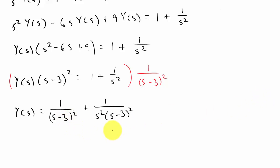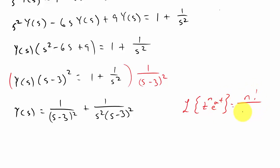We're going to have to take the inverse Laplace transform of both of these terms. The first one I can do directly — if you watched my first example, we know the Laplace transform of t^n · e^(at) equals n factorial over (s minus a)^(n+1). In this case n = 1, so that's in the right form. But for the second term, we're going to have to do partial fraction decomposition.